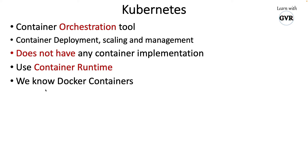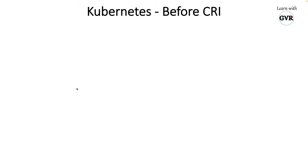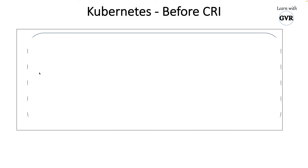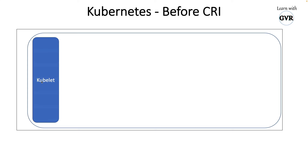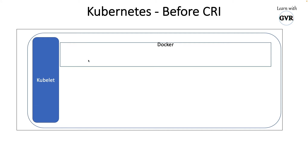Kubernetes was using Docker initially. Before CRI was born, on a Linux host, Kubernetes' kubelet — whenever you tried to create a pod using kubectl — would call a docker shim. The docker shim is a Kubernetes module implemented by Kubernetes to create and manage pods in a declarative way. For example, if you wanted two replicas, two identical containers would be created.